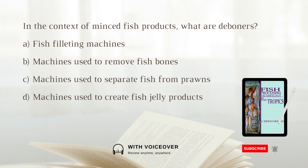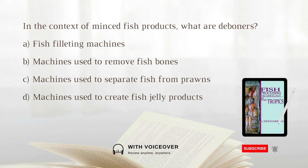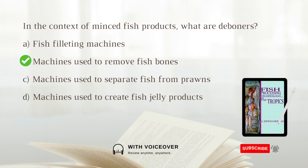In the context of minced fish products, what are deboners? A. Fish filleting machines. B. Machines used to remove fish bones. C. Machines used to separate fish from prawns. D. Machines used to create fish jelly products. Answer: B. Machines used to remove fish bones.